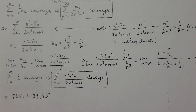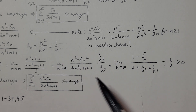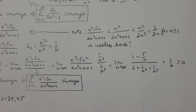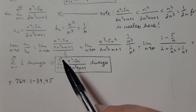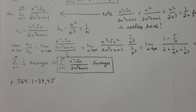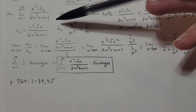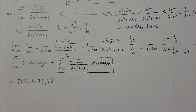So a_n = (n²-5n)/(2n³+n+1), the sequence inside the sum. For b_n, we could use 1/(2n), but dividing by 2 doesn't change convergence or divergence, so let's just set b_n = 1/n, which I know is a divergent series. We compute the limit as n→∞ of a_n / b_n = [(n²-5n)/(2n³+n+1)] ÷ [1/n]. Flipping the denominator gives us (n³-5n²)/(2n³+n+1).